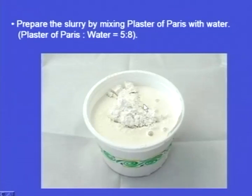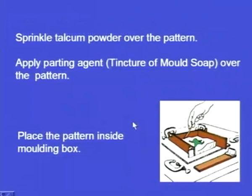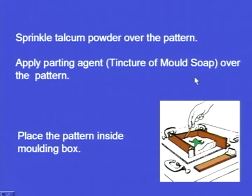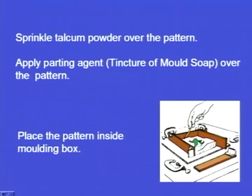The slurry looks like this — this is the plaster of Paris slurry. We sprinkle talcum powder over the pattern to get a fine finish over the cavity surface. Next, we apply a parting agent, which is the tincture of mould soap, over the pattern so that the plaster will not stick to the pattern. We then place the pattern inside the moulding box.